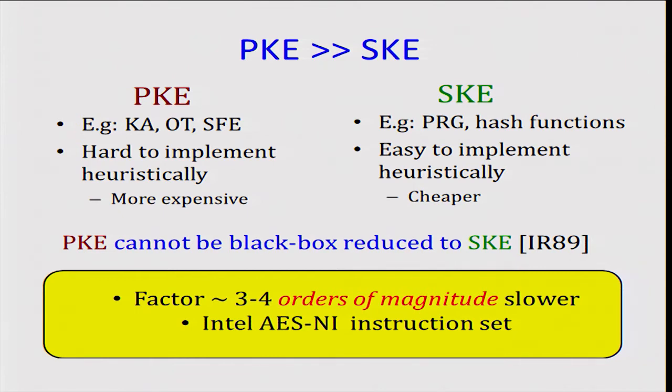This is also backed by theory which says that a broad class of public key primitives cannot be black box reduced to symmetric key primitives in general. In concrete terms, we have a factor of three to four orders of magnitude difference in efficiency between public key primitives and symmetric key primitives. In the particular case of symmetric key operations such as AES which are widely used, Intel even provides an instruction set which makes them even faster in practice.